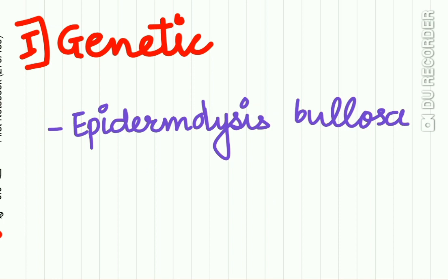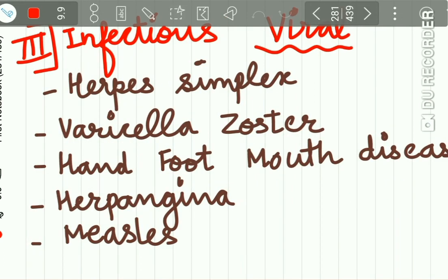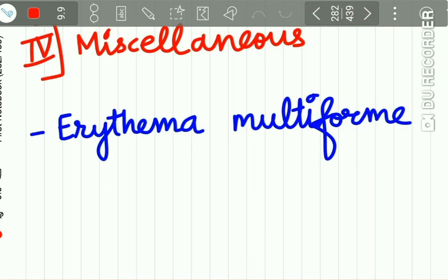Vesiculobullous diseases are divided on the basis of the etiological agent. The first group is genetic — those with a genetic cause, for example Epidermolysis bullosa. Second is immunologic cause, which includes Pemphigus, Pemphigoid, Bullous Lichen planus. The infectious or viral causes include Herpes simplex, Varicella zoster, Hand foot mouth disease, Herpangina, and Measles. The miscellaneous group includes Erythema multiforme.